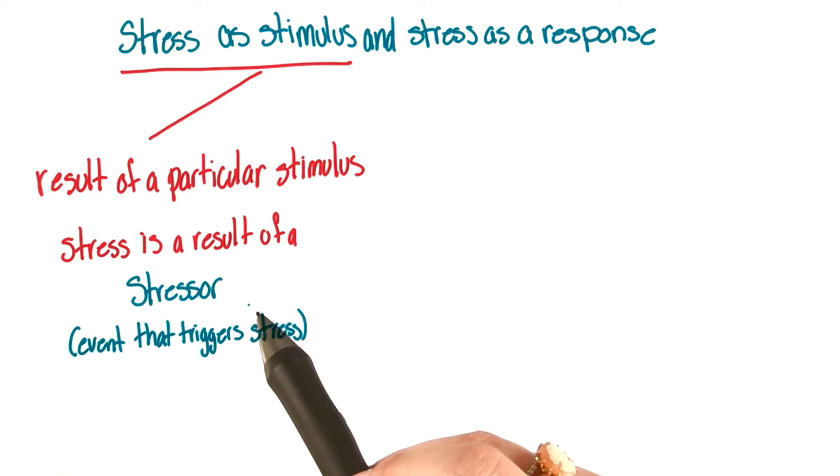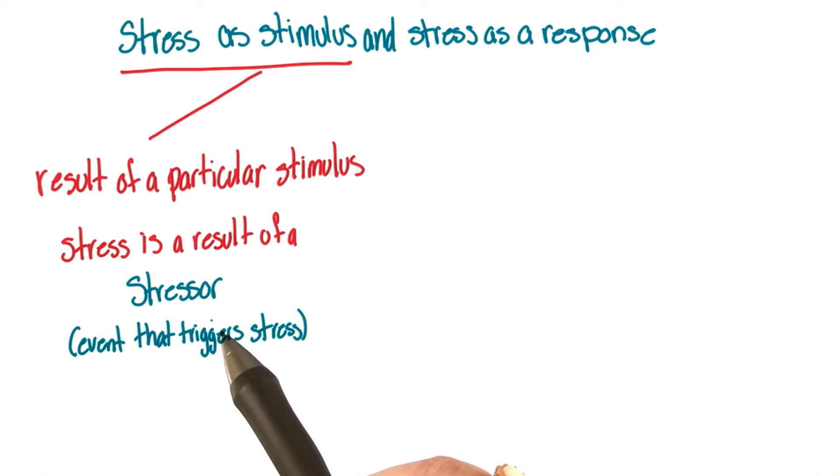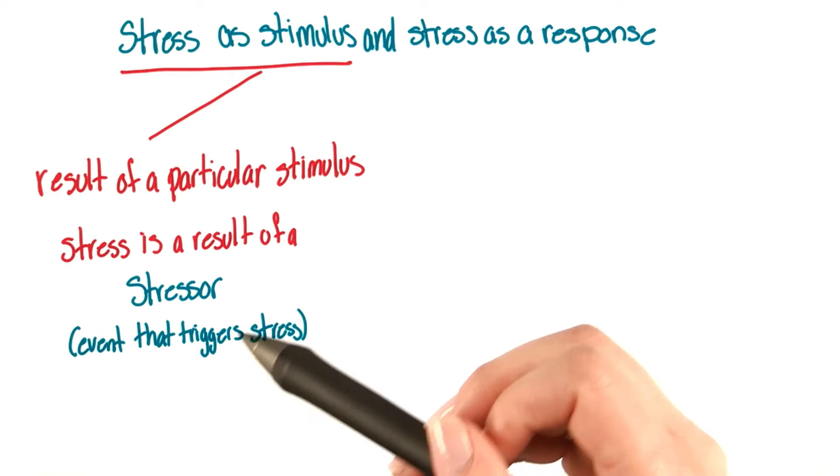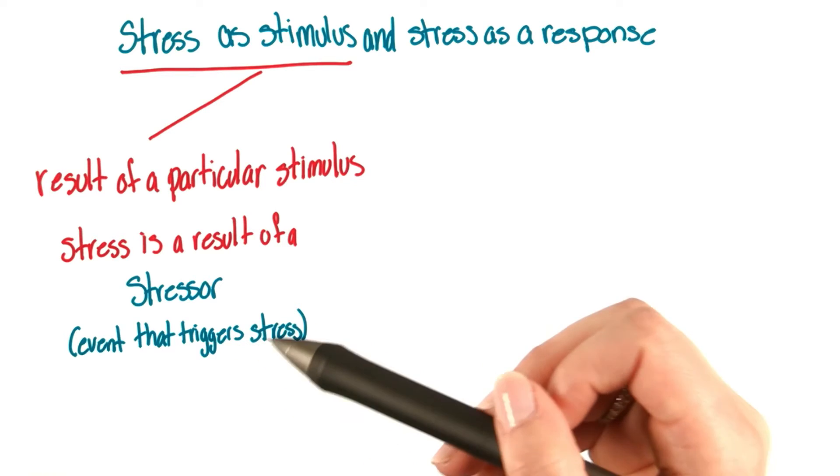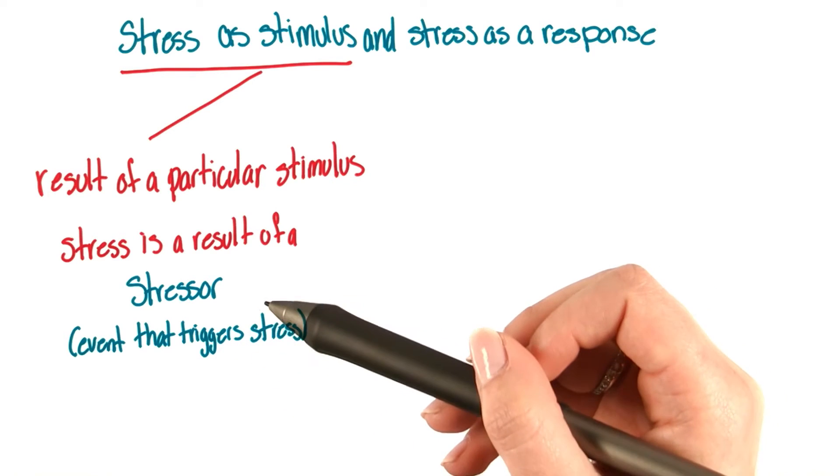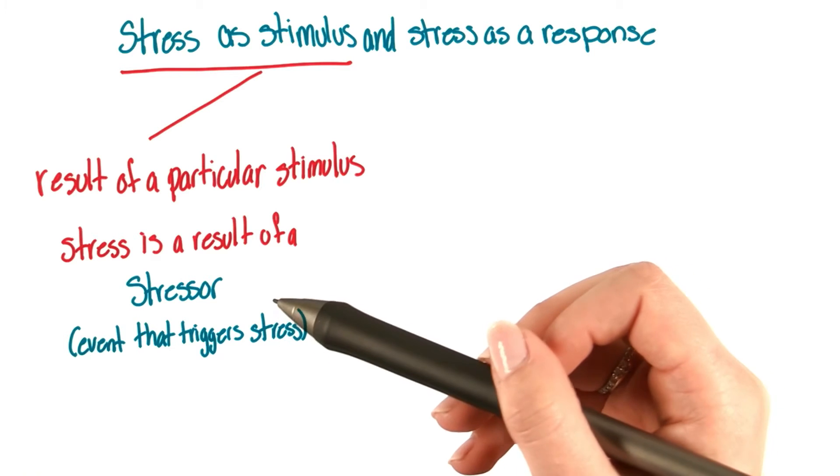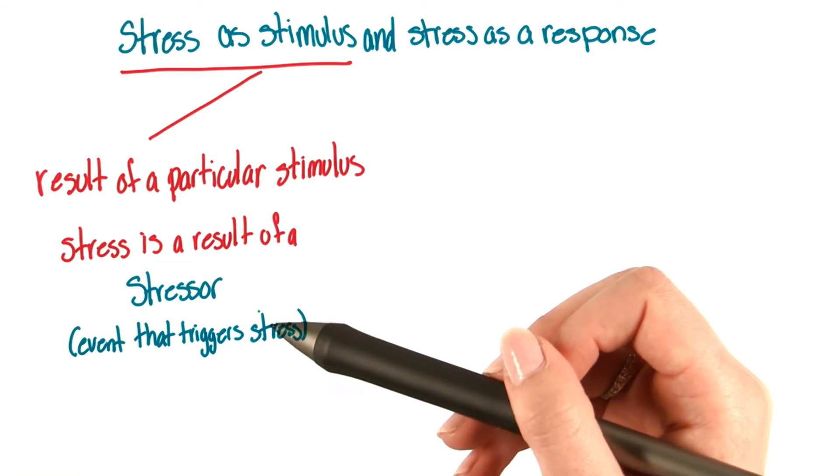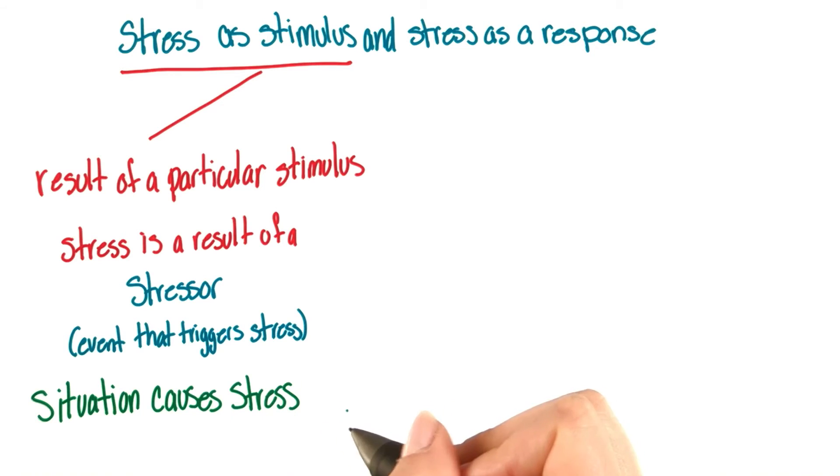In the example we discussed earlier, the stressor could be the 10-page paper that needs to be written. Another example would be writing a check that you realize you don't have the money in your bank account to cover, or getting in an argument with your roommate or friend. Any of those things could be stressors. The idea here is that a situation causes stress.